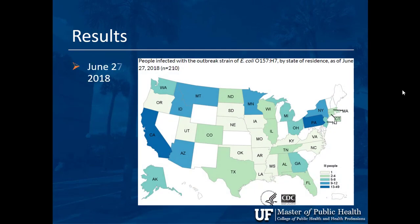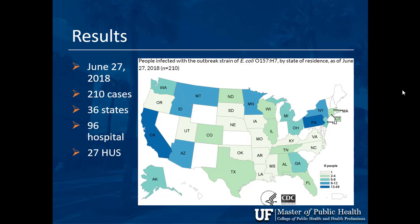Looking at the final results as of around June 27: there were 210 reported cases spread across 36 states, 96 people hospitalized, 27 developed HUS complications, and 5 deaths were reported. Deaths occurred in Arkansas — where ironically there was only one reported case and one death — California, Minnesota (two deaths), and New York. Not everything is reported; these numbers give us a picture of what's going on and where to look.